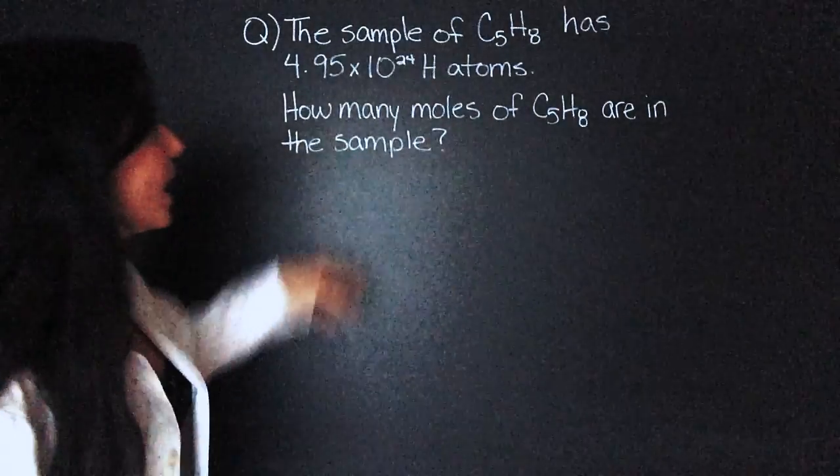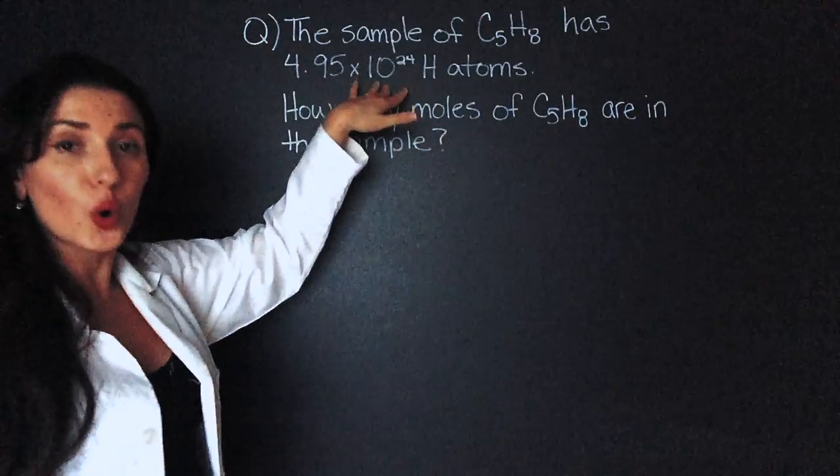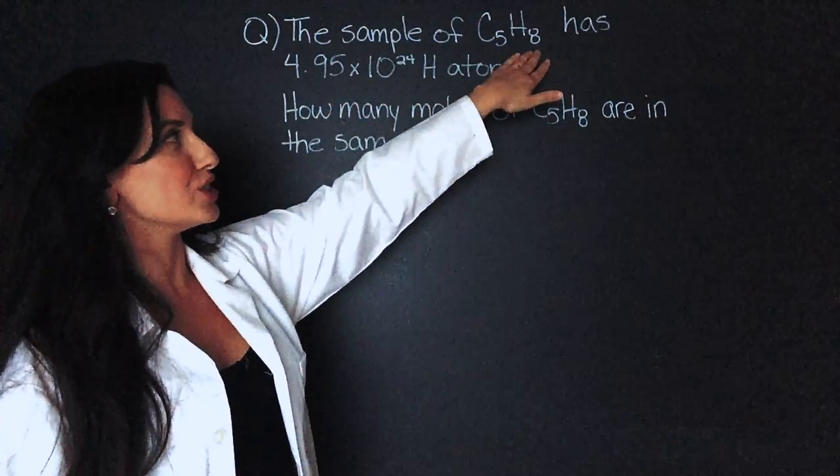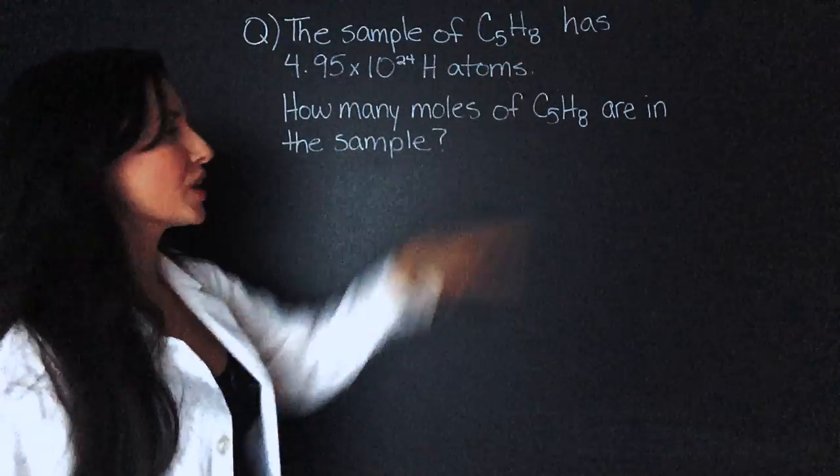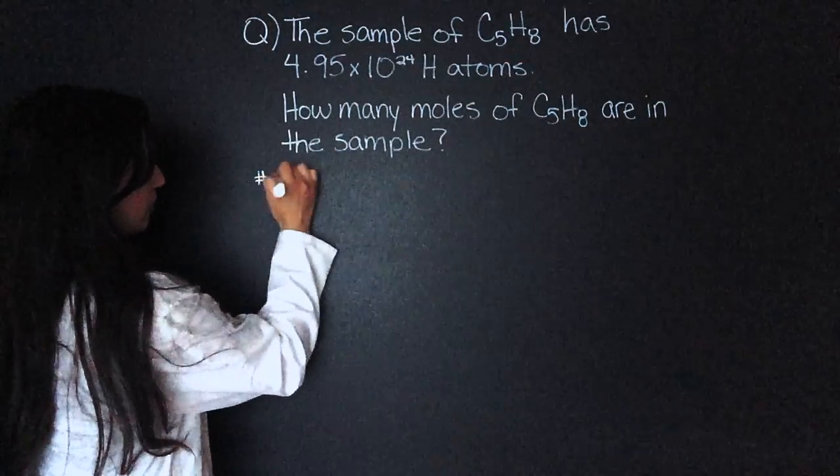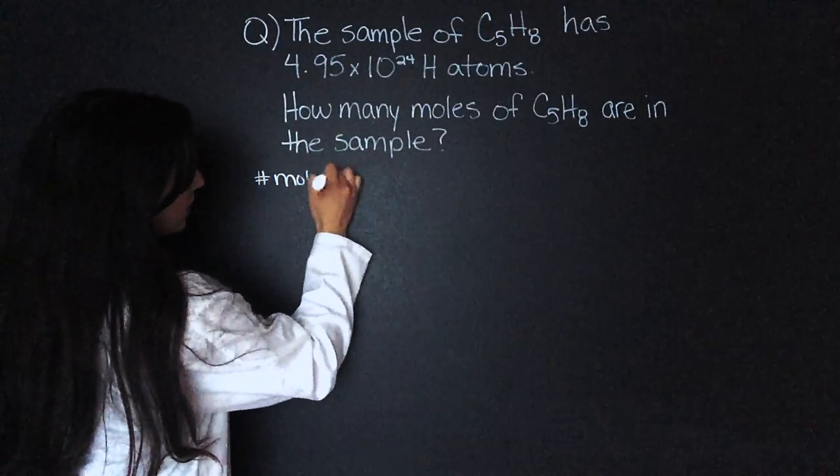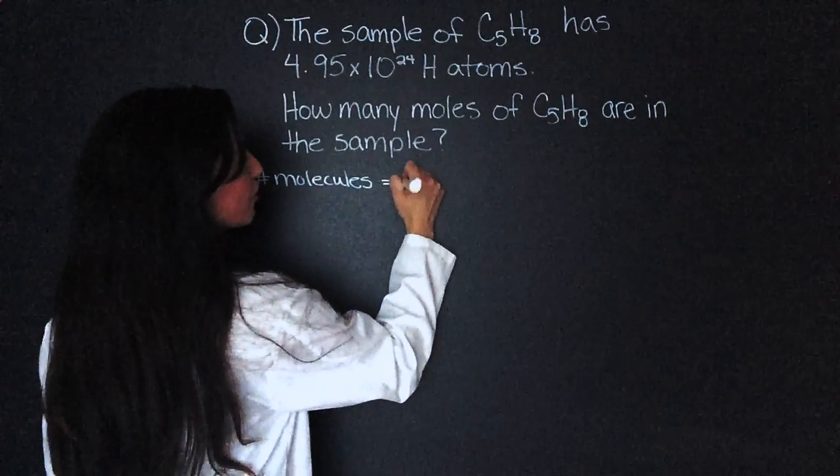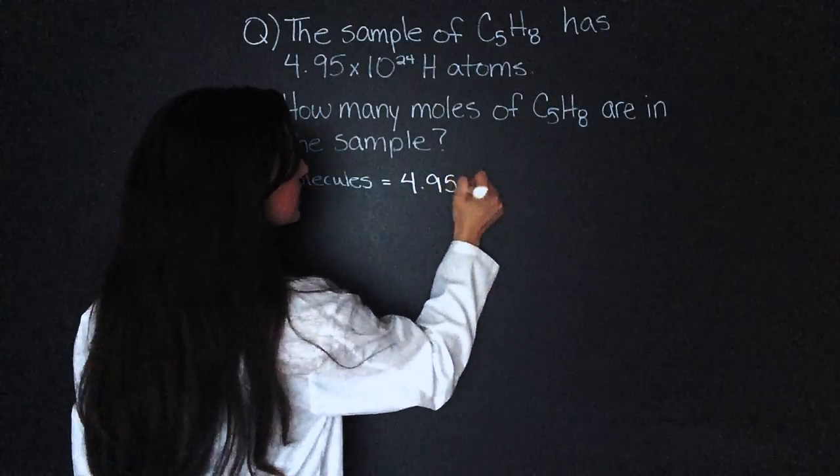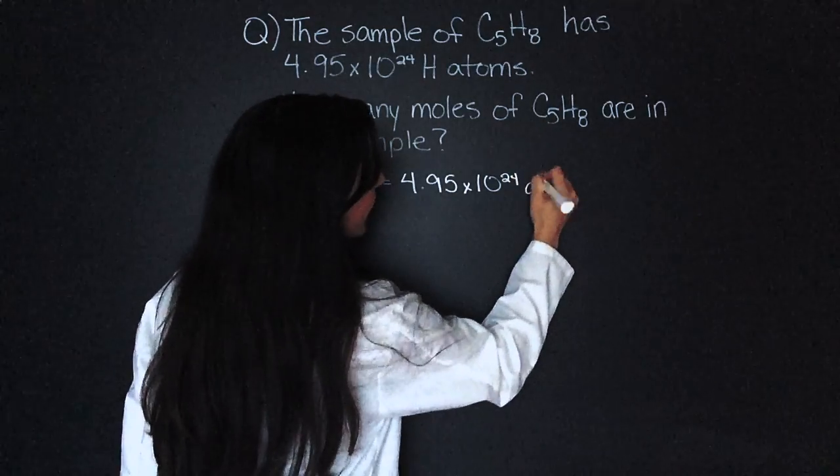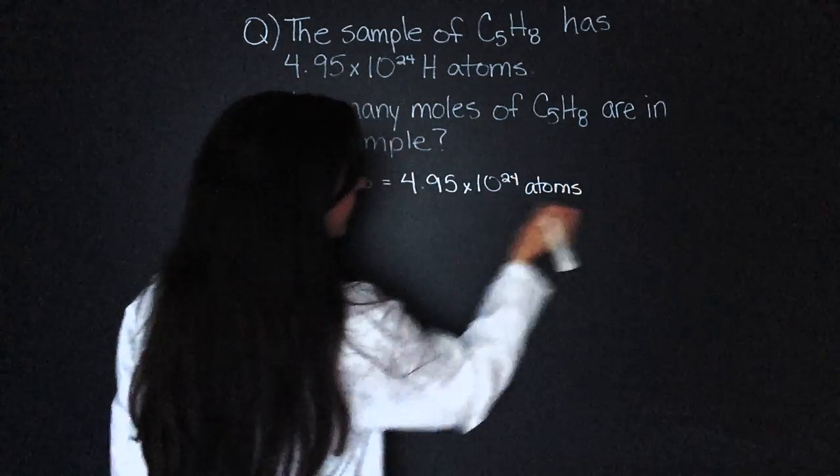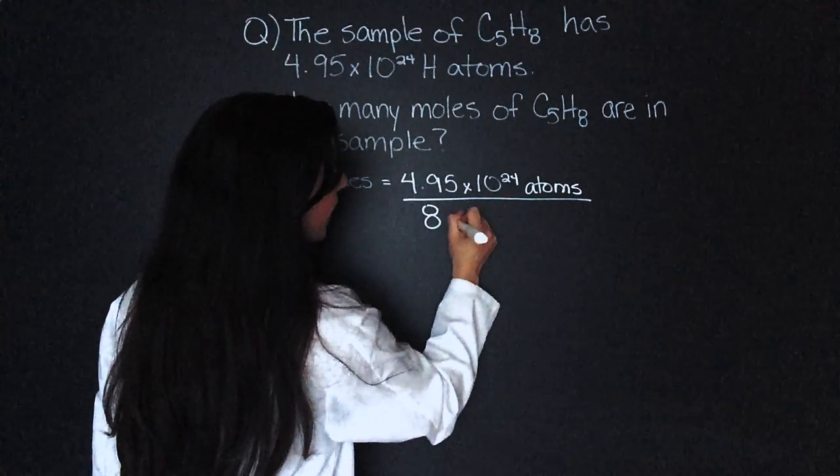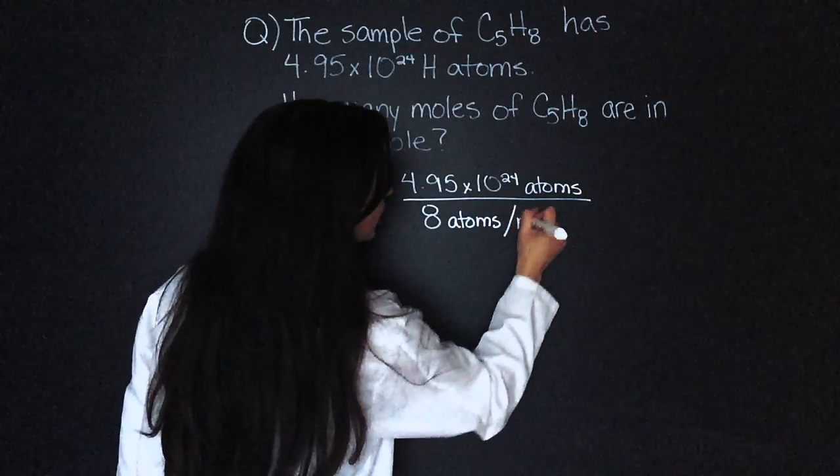So we're given the hydrogen atoms and according to the molecular formula, there are 8 hydrogen atoms per molecule. So to find the number of molecules in the sample, we will take 4.95 times 10 to the 24 atoms divided by 8 atoms per molecule.